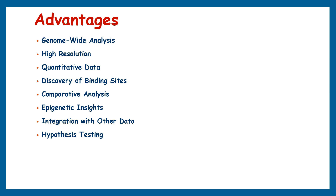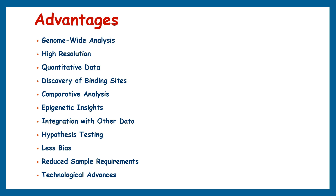ChIP sequencing has less bias compared to previous techniques like ChIP-chip, as it doesn't require pre-designed probes, making it more suitable for detecting unknown or unexpected binding sites. It also requires less starting material compared to other techniques. Continuous advancements in sequencing technologies have improved the efficiency, sensitivity, and cost-effectiveness of ChIP sequencing, making it an overall systematic and comprehensive approach to studying protein-DNA interactions, gene regulation, and epigenetic mechanisms.